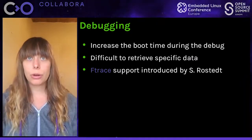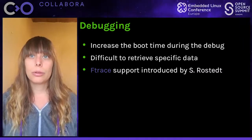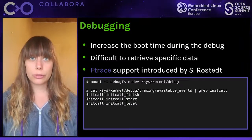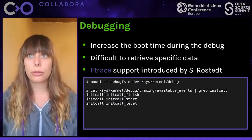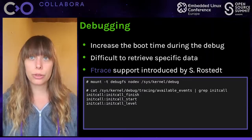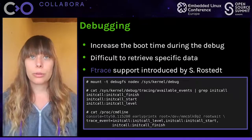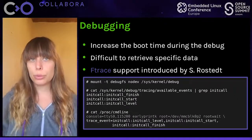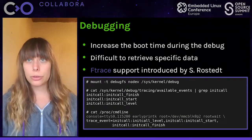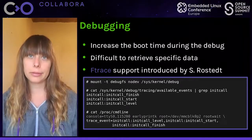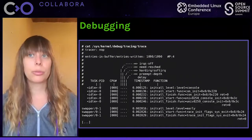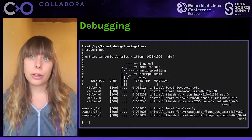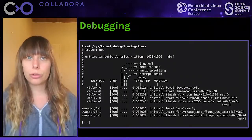Moreover, it's difficult to retrieve specific data from the console output. These points are improved by using Ftrace. Here is an example of how to do that. First, you mount debugfs. Then in the tracing folder, you can retrieve the available events to trace. You can see that there are three events for init calls: start, finish, and level. Then in your command line, you add the trace_event keyword with all the different events you want to trace. You open the trace file to get all information about all init calls, including the execution time of each one. You can also use tools to filter, such as grep.